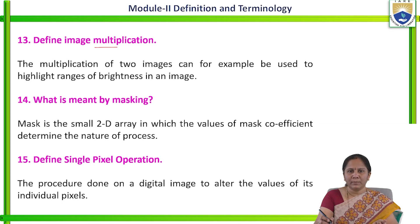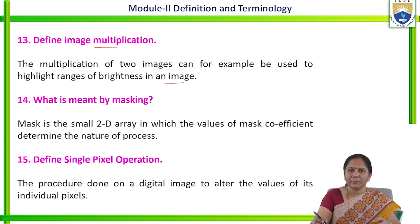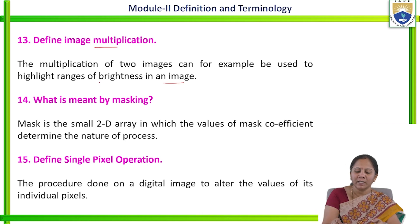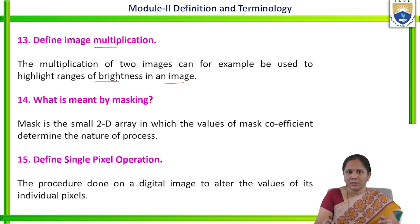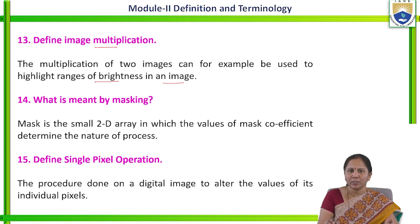If the multiplication operation is performed between two images, then it is called image multiplication. If multiplication is performed between two images, it is going to highlight the brightness of that particular image. The first pixel of image 1 will be multiplied with the first pixel of image 2, and the second pixel of image 1 will be multiplied with the second pixel of image 2. Based on the multiplication factor, the brightness of the image will be changed.